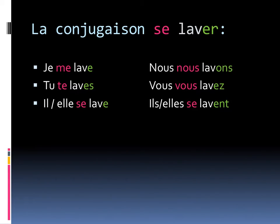When we continue pour les pluriels, se makes some pretty big shifts. Nous, nous lavons — the nous doubles up, and it's pretty fun to say. We do the same thing for vous: se modifies to vous. Vous, vous lavez. In the pluriel, ils ou elles, it stays as se.